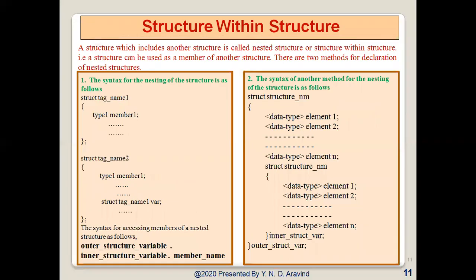Structures within structure: a structure which includes another structure is called a nested structure or structure within a structure — that is, a structure can be used as a member of another structure. There are two methods for declaring nested structures. In the first method, a structure of one type is made a member of another structure. In the second method, one structure is defined inside the outer structure as an inner structure.